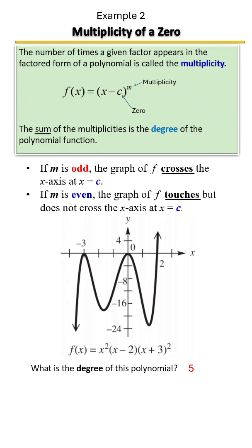The other thing we want to look at is where on our graph it's going to touch or cross. When we say touch, it touches the x-axis, turns around and goes back the other way. Cross means it passes through the x-axis. Odd multiplicities are where it crosses.